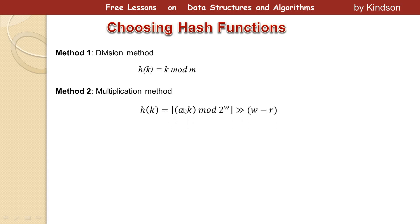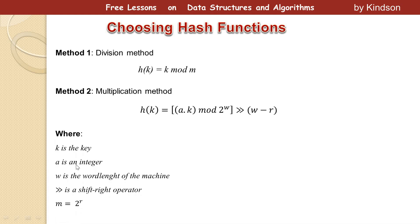The second method is the multiplication method. The formula is h(k) = (a · k mod 2^w) >> (w − r). Here k is the key, a is an integer, w is the word length of the machine — such as 64-bit or 32-bit — and >> is the right-shift operator. The relationship between the number of slots and r is m = 2^r, where m is the number of slots in the hash table.